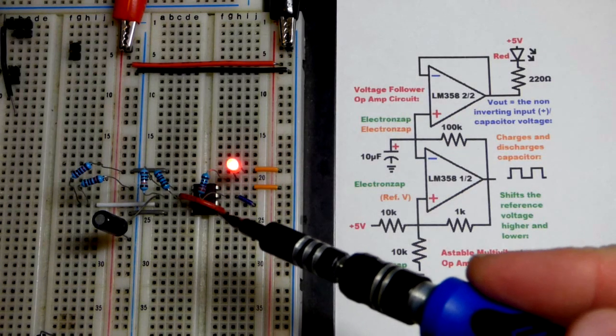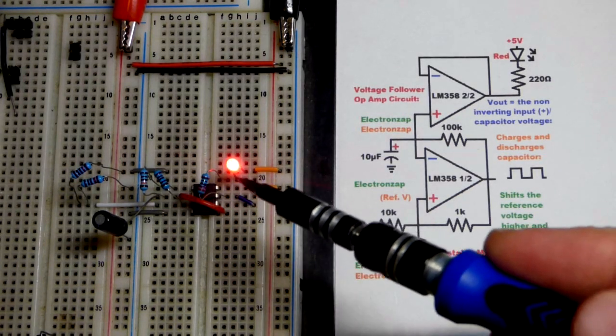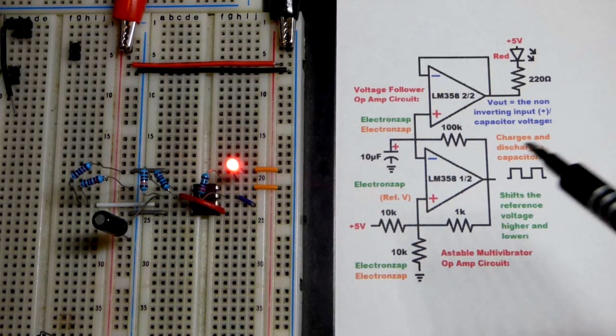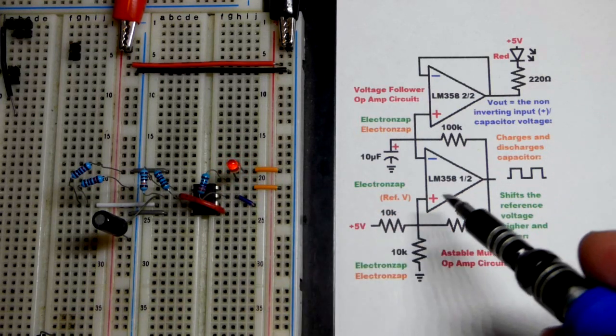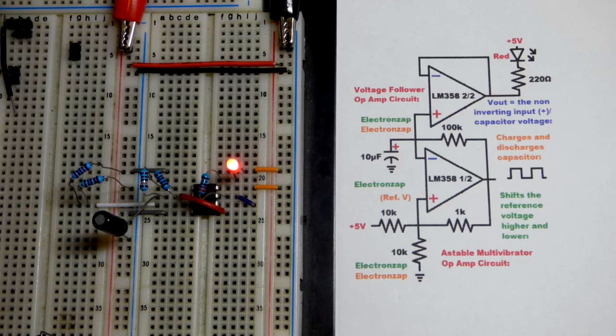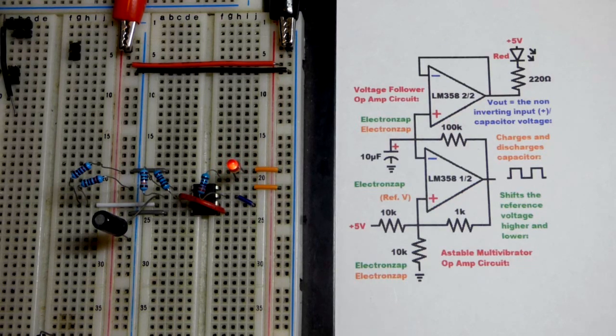So now in this video we have a couple op-amps that are fading the LED on and off completely right there, which I think is a cool looking effect. The two op-amps are on the same integrated circuit. It's a dual op-amp integrated circuit, the LM358.